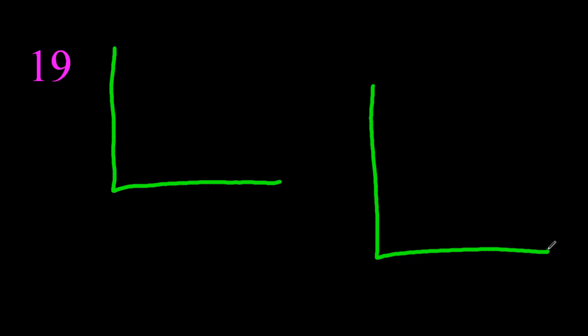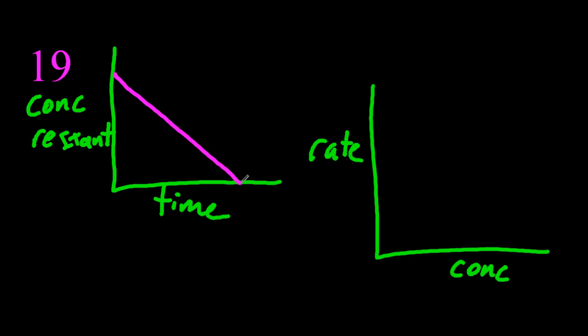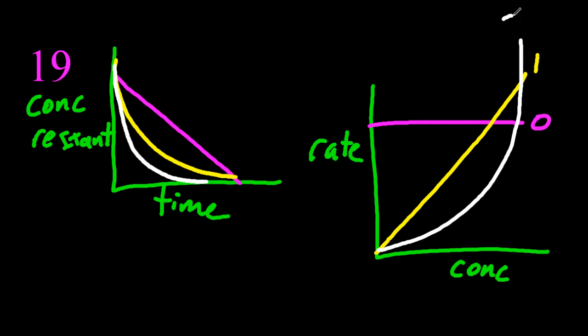Number 19. Don't get these two graphs confused. No one can do them, so if you can, you might turn your six into a seven. One, two, three, four, five, and six. Lovely. Lovely. The tiny numbers are the order of reaction with respect to the reactant.